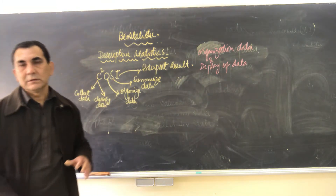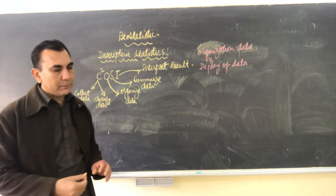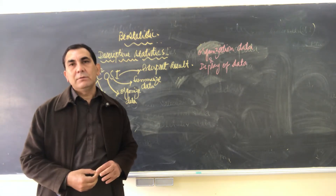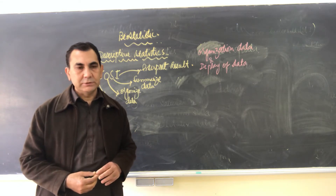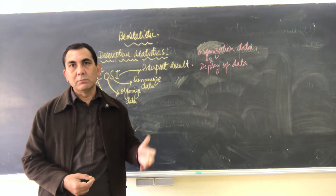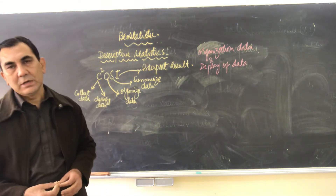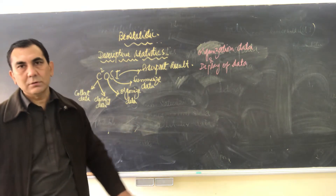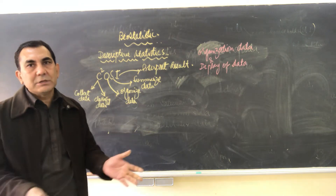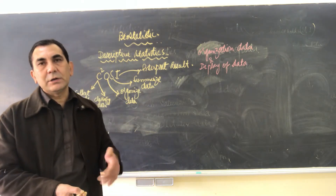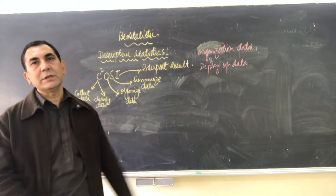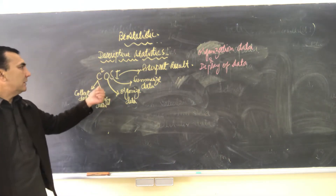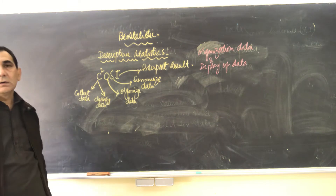In descriptive statistics, we collect information and describe the data in numbers — the proportion, the percentage, and the frequency table — just to summarize and interpret the data and present results in the proportion, percentage, or frequency table.